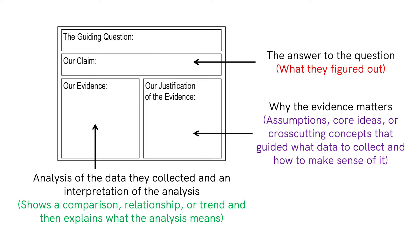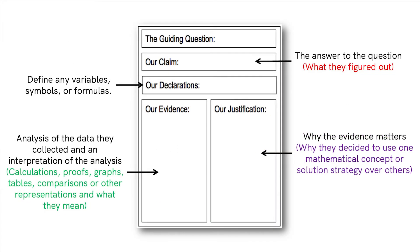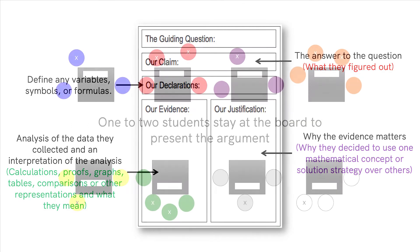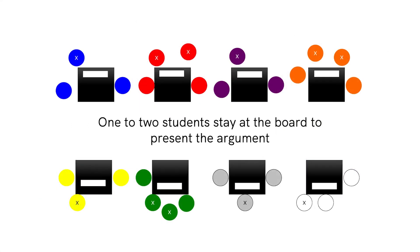In the justification, students explain why that evidence matters. The board for math looks very similar — the only difference is that in math, students are also asked to put the symbols, formulas, and variables they were using. Once the boards are created, students will set them up around the classroom.